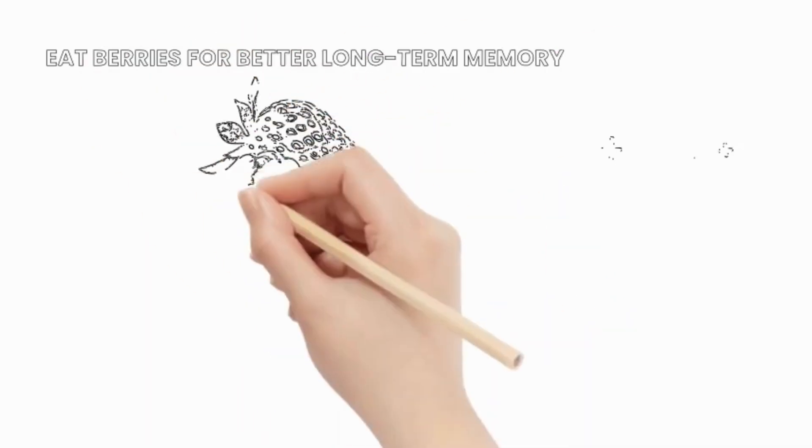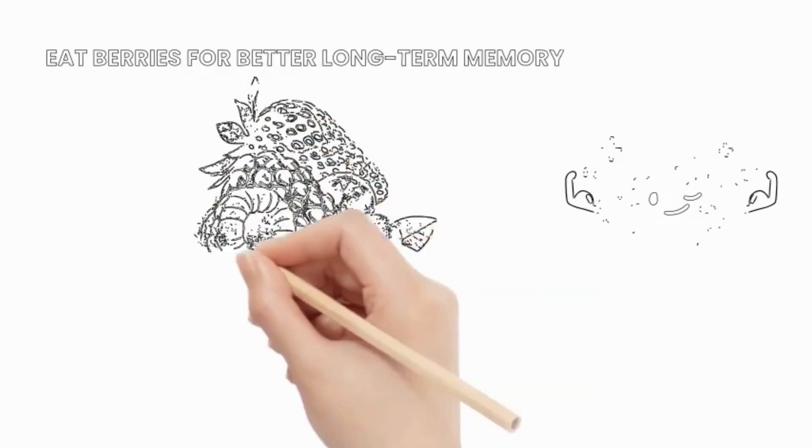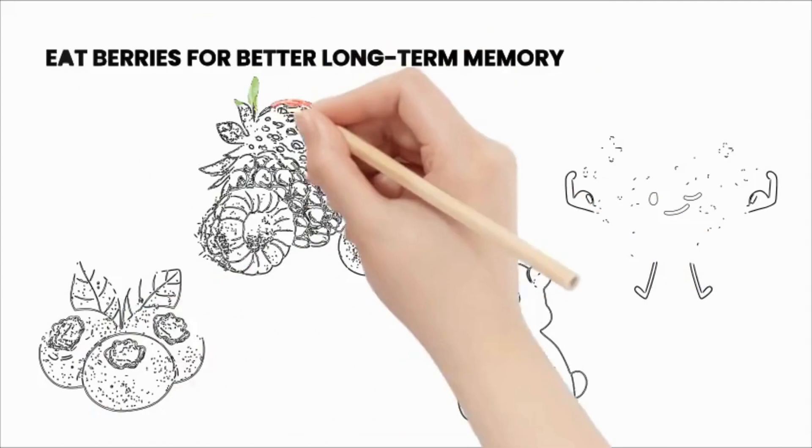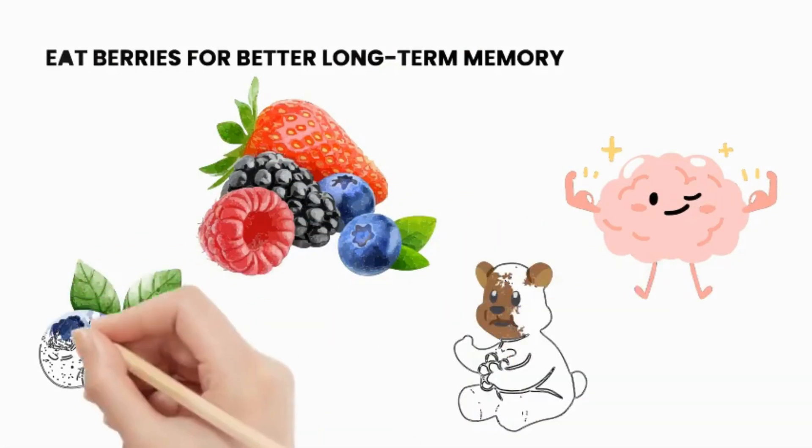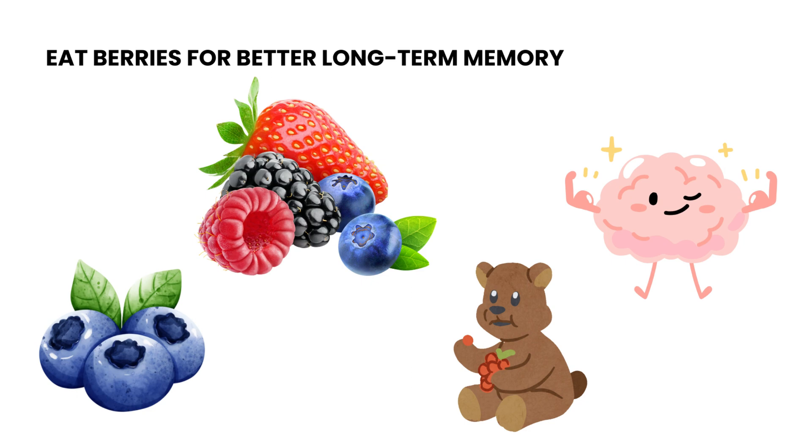Eat berries for better long-term memory: Berries, such as blueberries and strawberries, contain compounds that enhance existing connections in the brain, which may help prevent memory decline and improve long-term memory.